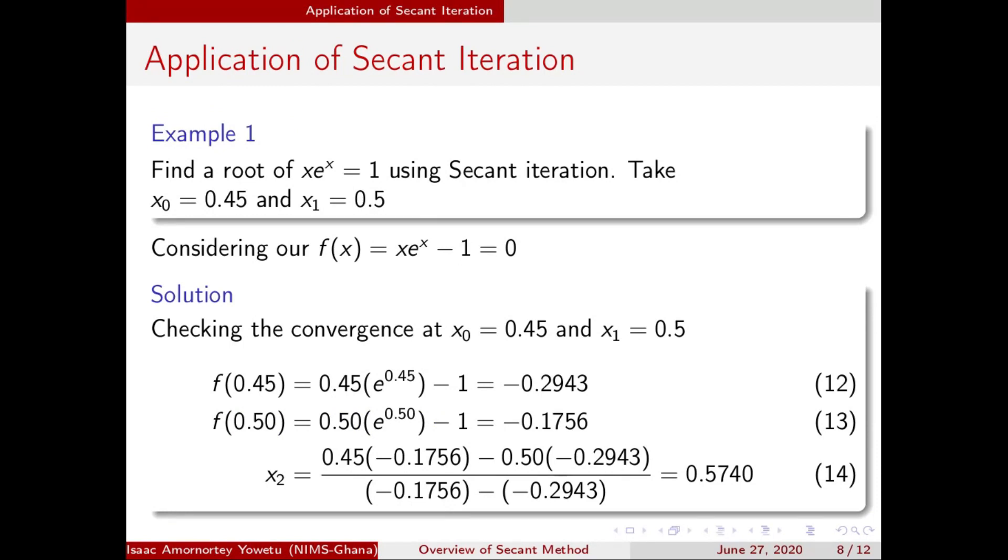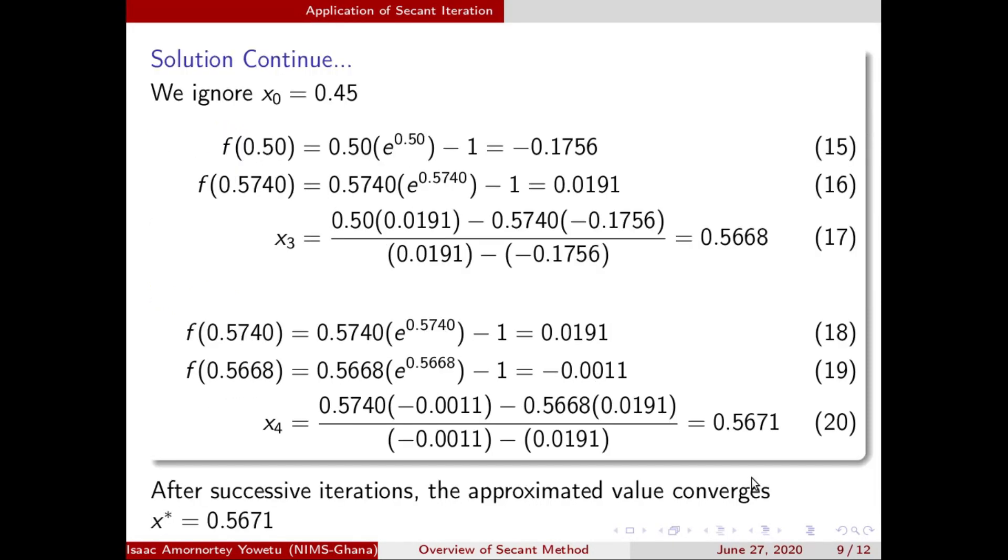We want to look at two good examples under this Secant method. Assuming we are given this equation using Secant iteration with initial approximations x0 and x1. We rewrite the function f(x) in terms of this. We find the functional value of x0 and x1. We substitute these into the formula, which gives us x2. We now ignore x0 and use x1 and x2 with their respective functional values and substitute to get x3.